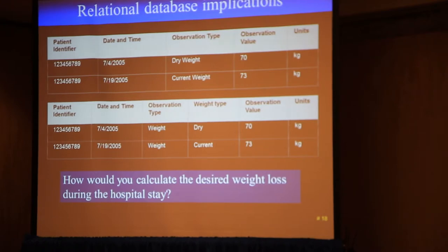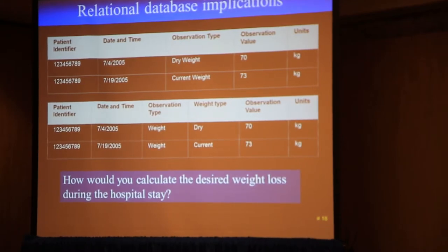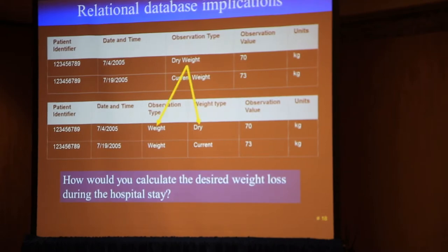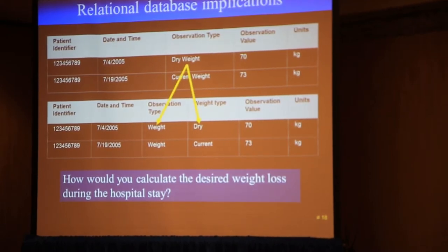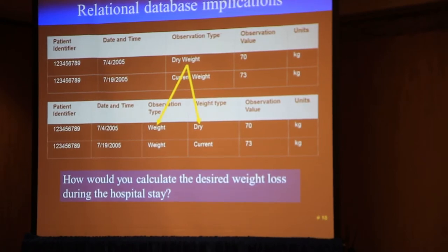In the second case, you're doing exactly the same thing, but the actual query is different because you're going to say where observation type is just weight, and then where weight type is dry or weight type is current. The information content is identically the same, but what was in one slot of the model in the first one, you end up with two columns or two attributes — two elements in the model in the second one.